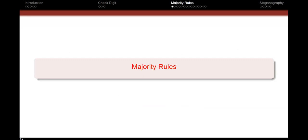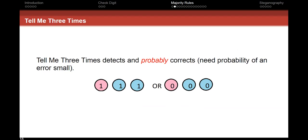A lot of this is related to majority rules. The 'tell me three times' approach can probably correct an error. We promise to only send 1-1-1 or 0-0-0 and never anything else. With three bits, there are eight possible messages but we're only allowing two — only 25% of possible messages are available. Is this a huge loss? Well, it's always in comparison to context.